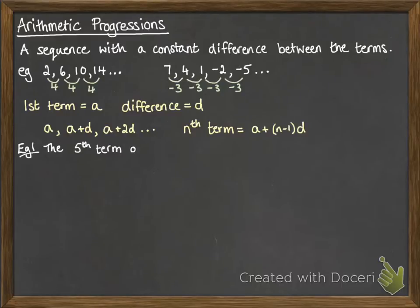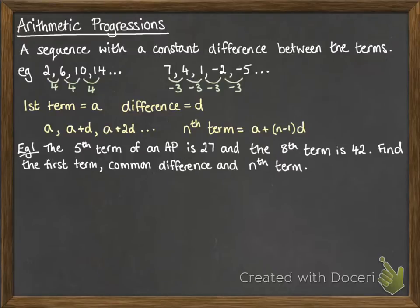Example number one, we've got the fifth term of an AP is 27. The eighth term is 42. We're going to find the first term, common difference, and the nth term. So, let's first of all start by writing down as a formula what we've been told. So, the fifth term, that would be A plus 4 lots of the difference, and that equals 27. The eighth term gives us A plus 7D makes 42.